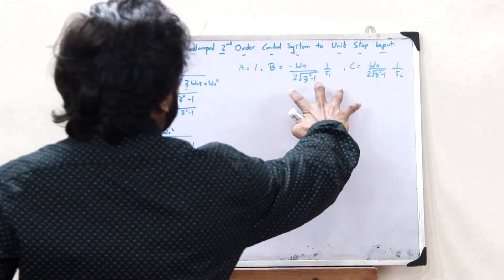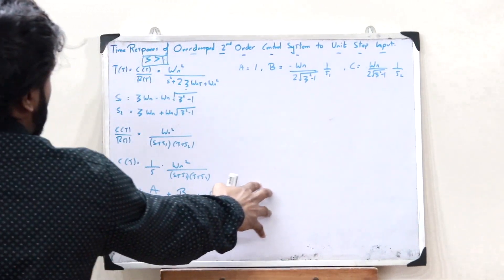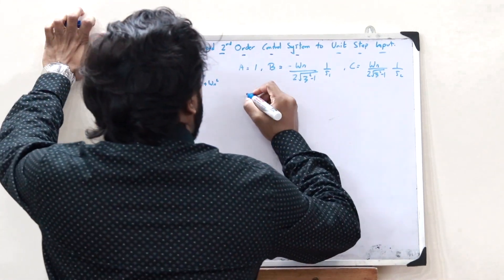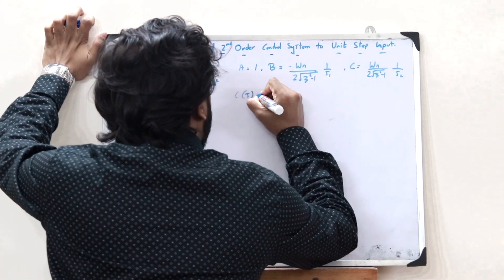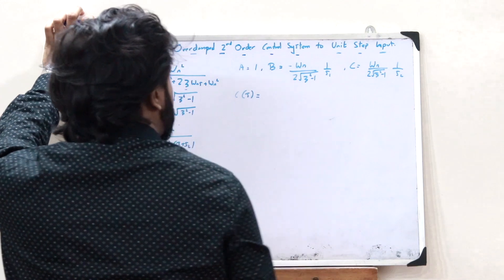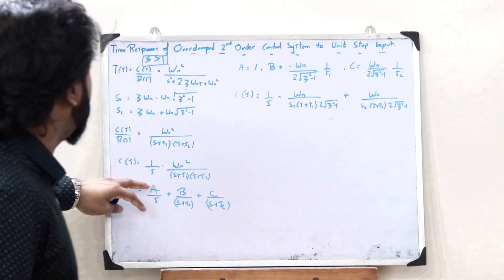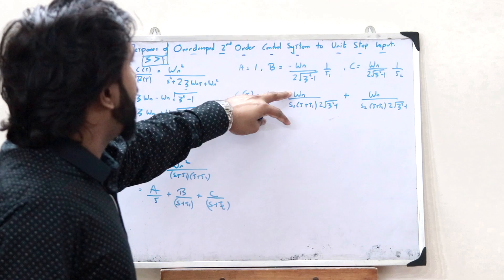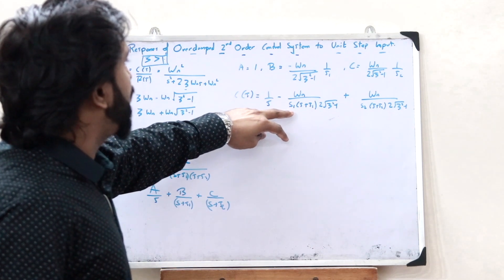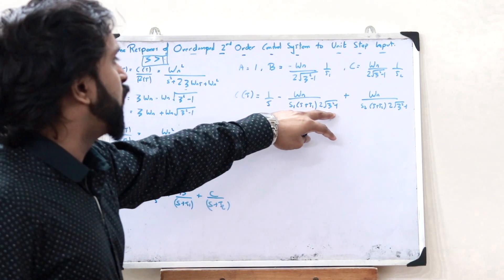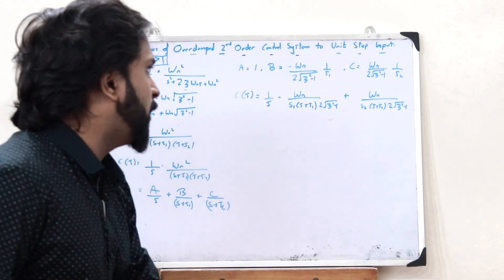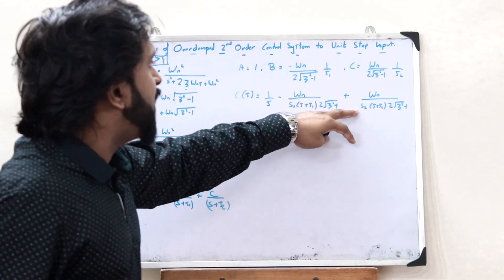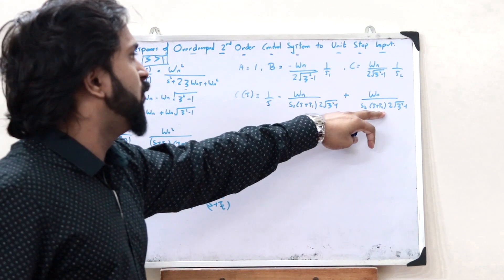Upon substituting these three values, we get C(S) = 1/S minus omega_N divided by [S1 × (S + S1) × 2 root of (zeta squared minus 1)] plus omega_N divided by [S2 × (S + S2) × 2 root of (zeta squared minus 1)].